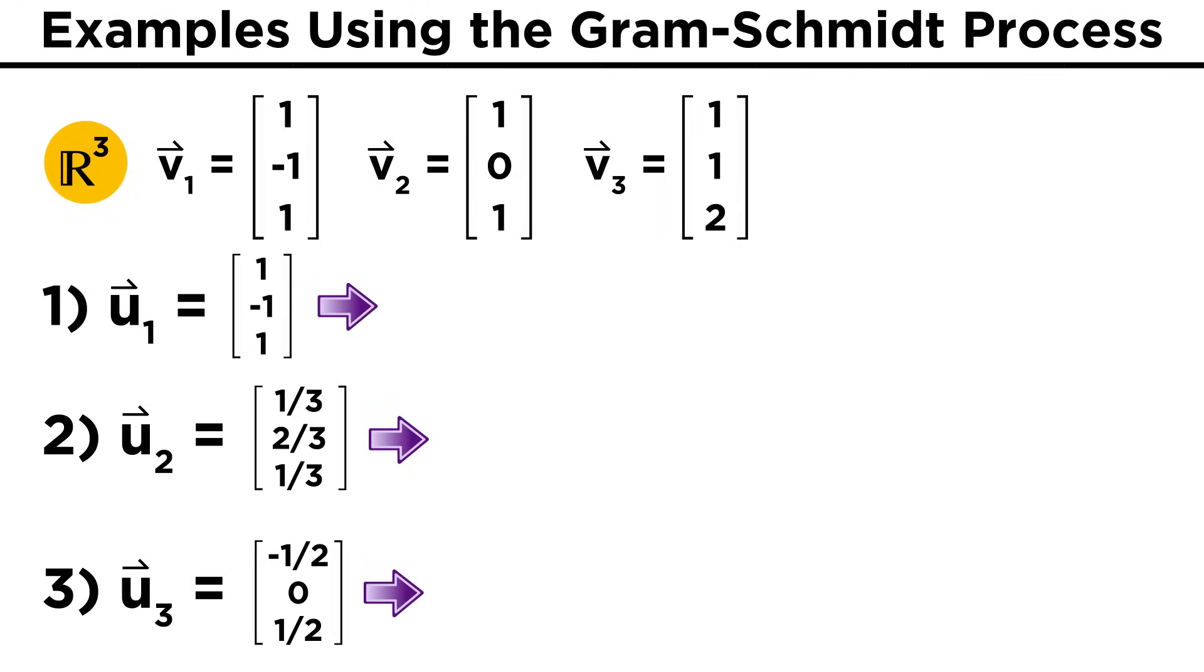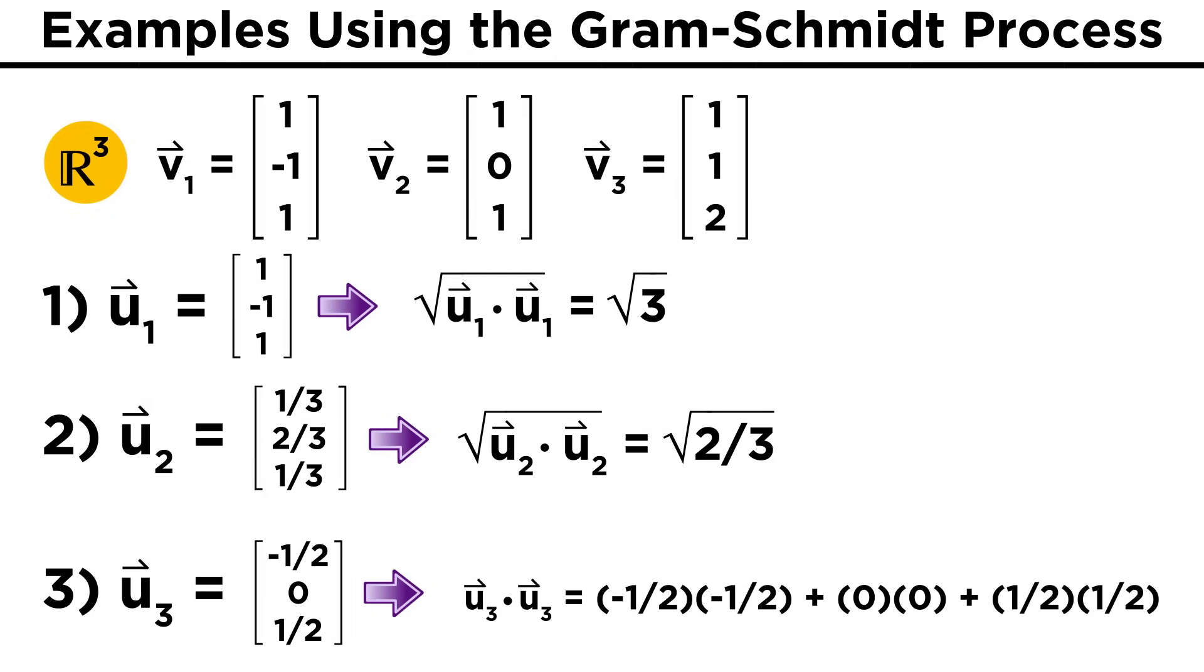To be thorough, let's go ahead and do this for the three vectors we just found. u1 equals one, negative one, one; u2 equals one third, two thirds, one third; and u3 equals negative one half, zero, one half. We know that u1 dot u1 equals three, so the length of u1 is root three. We also saw that u2 dot u2 was two thirds, so the length of u2 is root two thirds. We must still calculate u3 dot u3, which ends up being negative one half times negative one half plus zero times zero plus one half times one half, which equals one half. So the length of u3 is root one half.